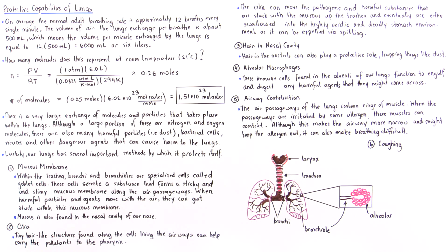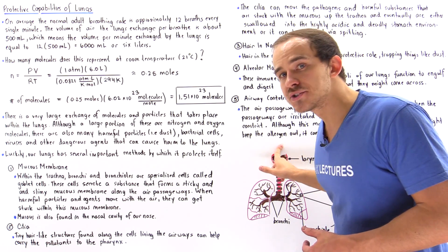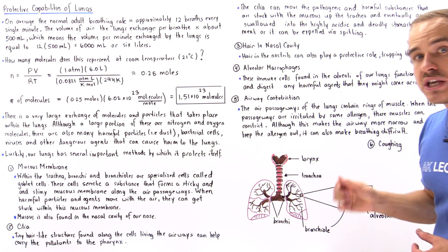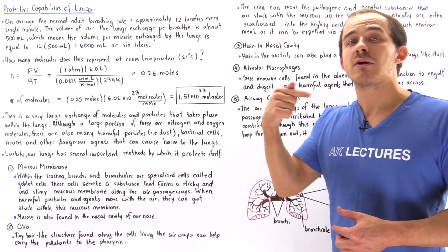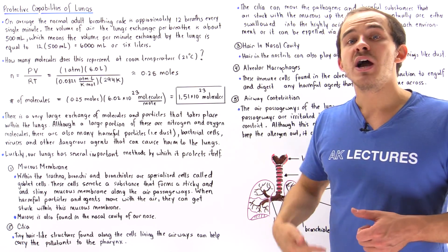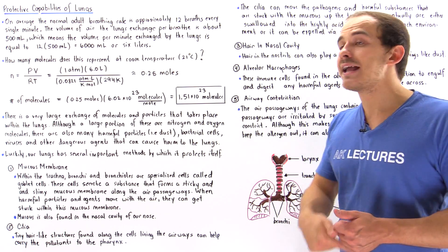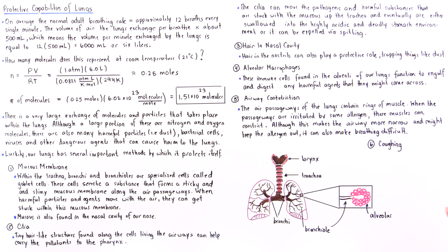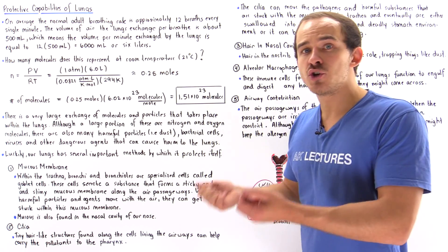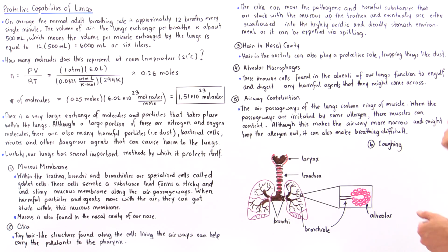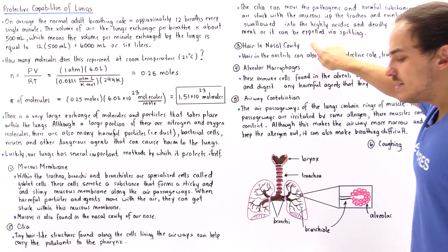The cilia can move the pathogens along our trachea, and ultimately those pathogens end up in our pharynx. Then those pathogens either can be swallowed through our esophagus and end up in our highly acidic and highly deadly environment inside our stomach, which can kill off that pathogen, or we can expel that pathogen or harmful substance via the process of spitting.